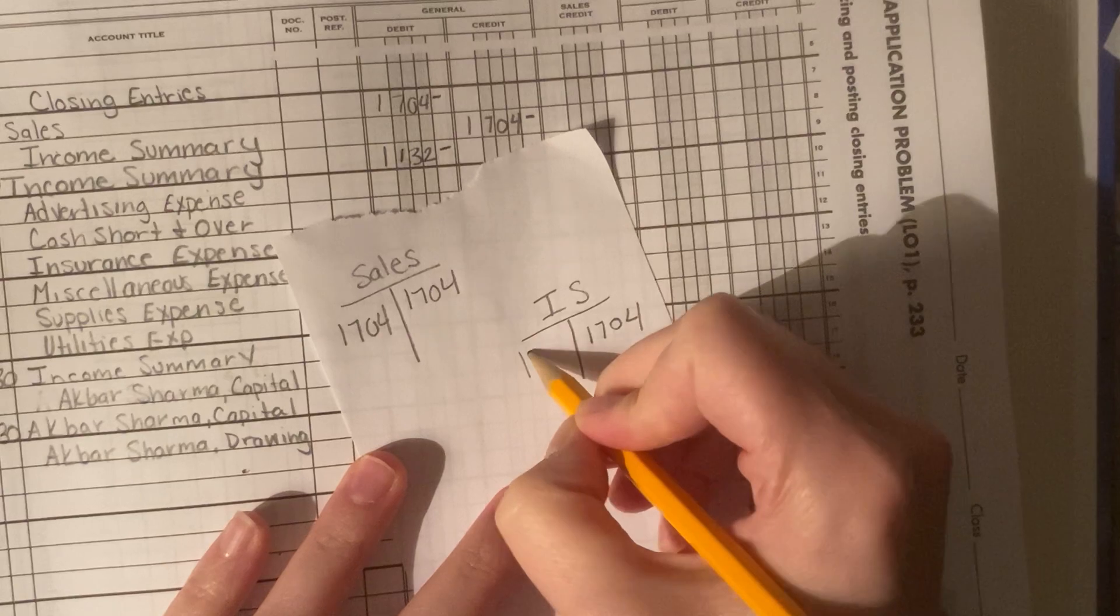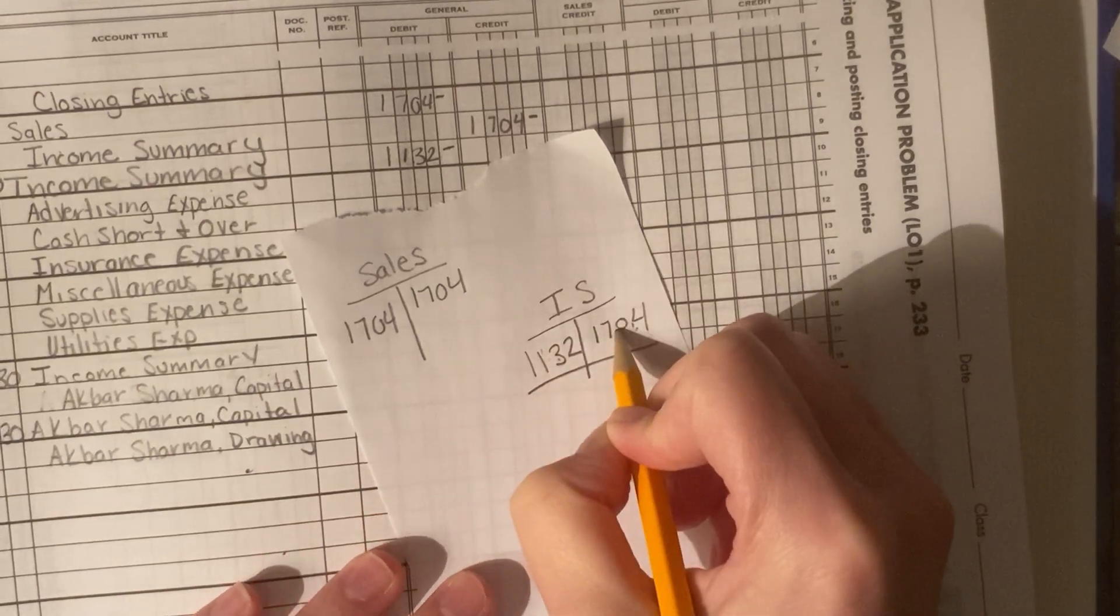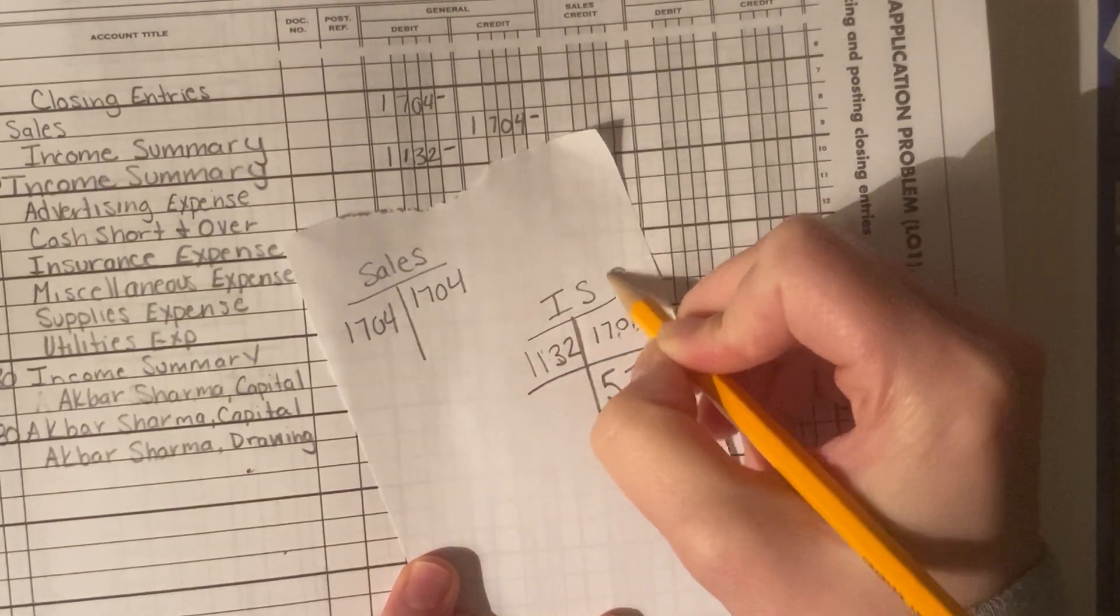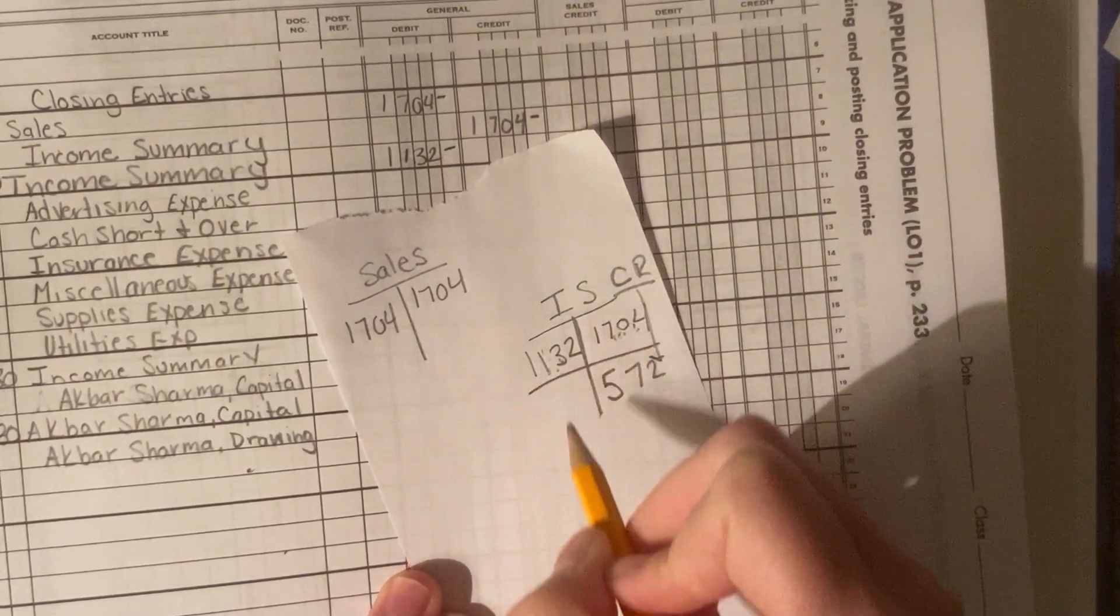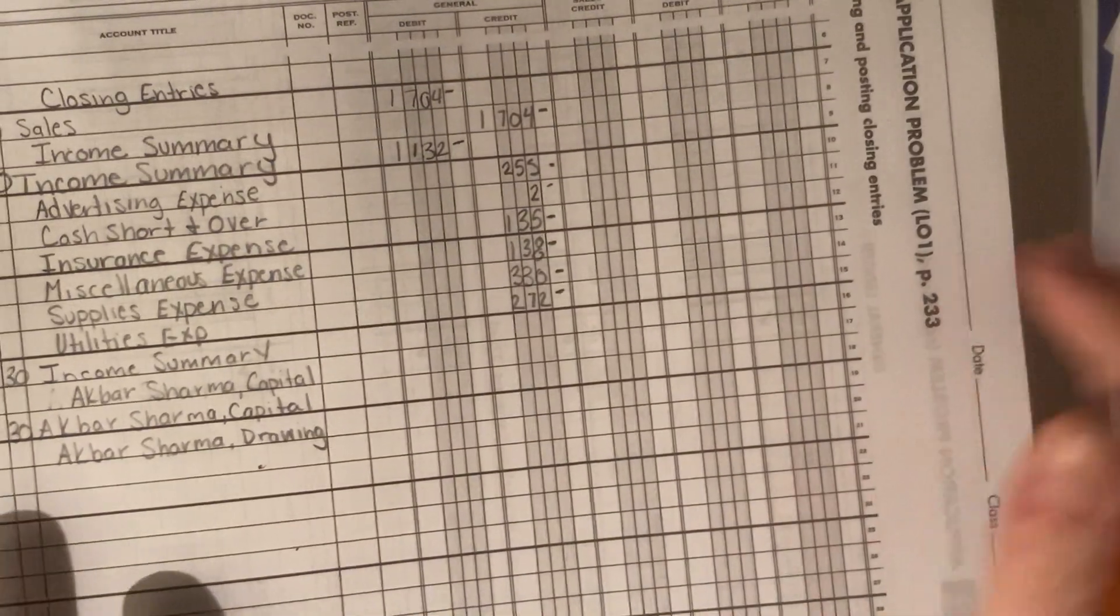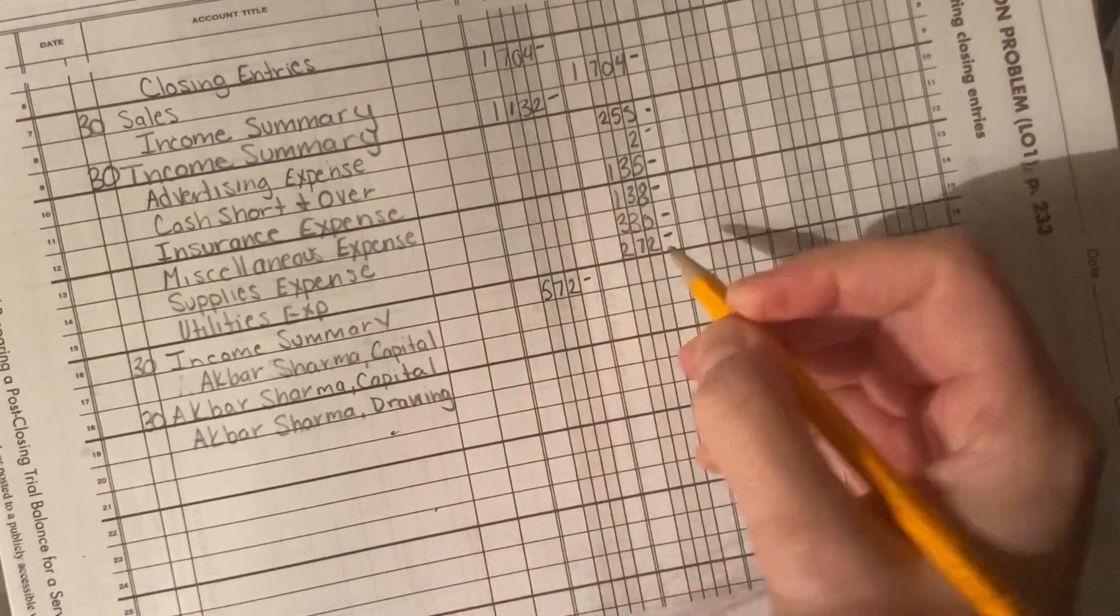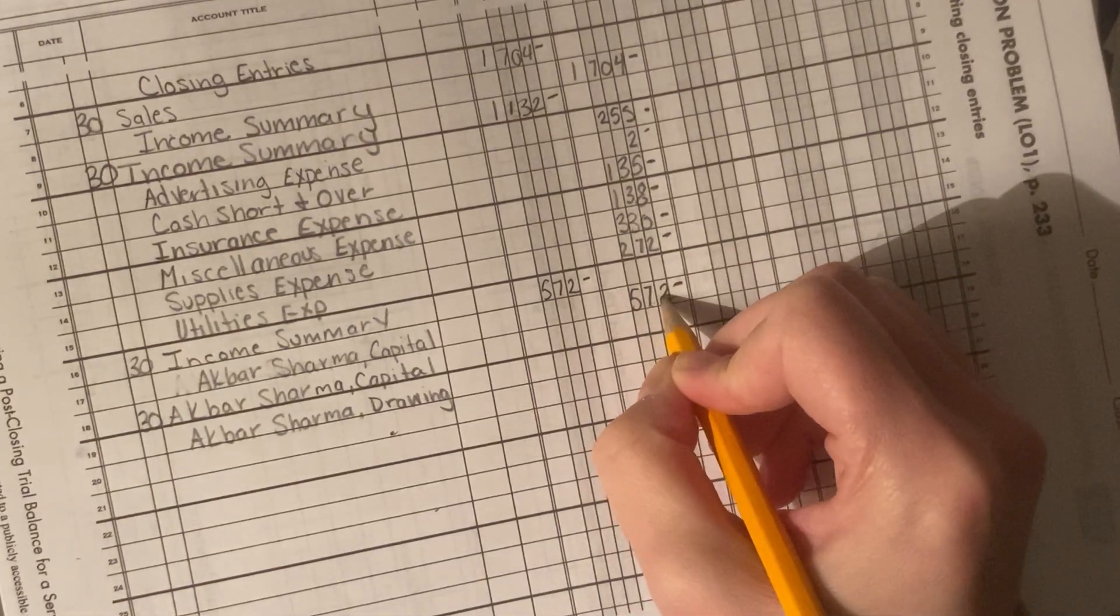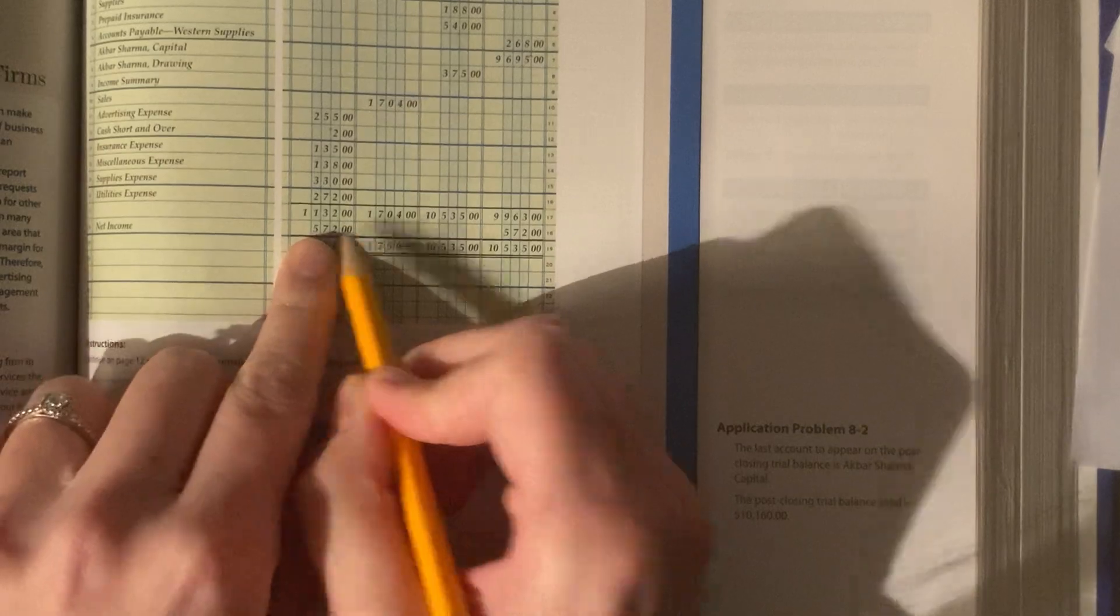So, $1,132 for income summary. This balance is more than this one. We need to subtract credit from debit to get a total of $572. Credit balance. If this number was bigger than this one, it would be a debit balance, but it's not. So, now our income summary has a credit balance of $572. We need to close out that income summary, $572. Close it out to the capital account. That's just what we do. The capital account is permanent, and you can take that. That's our net income. If you did it right, it should be the same number that's here, $572. Net income. Check yourself.